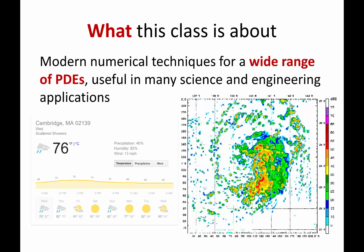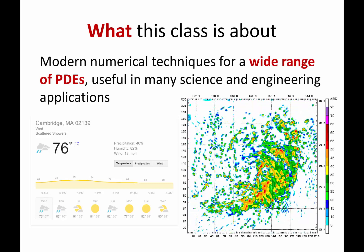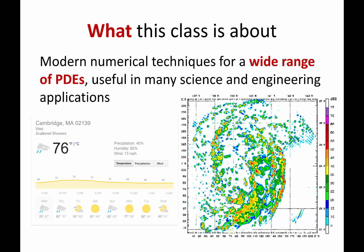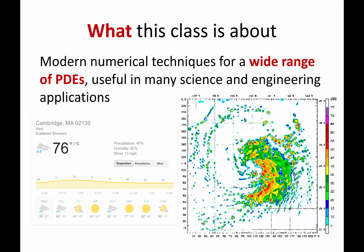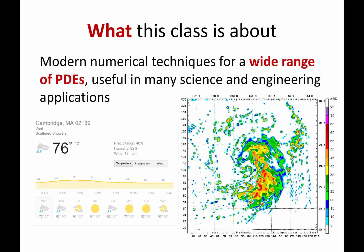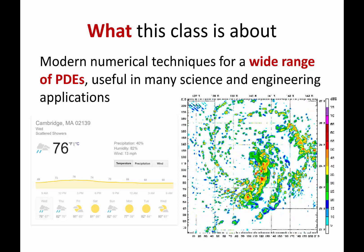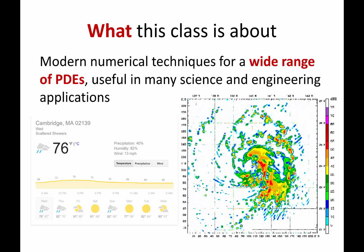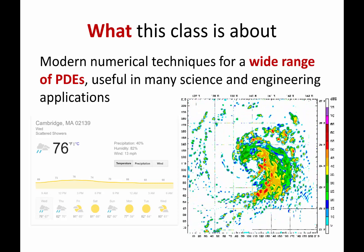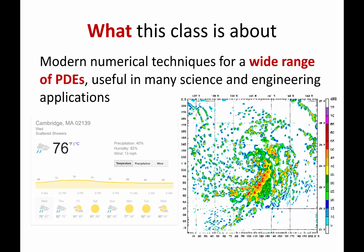So you have to time-integrate these partial differential equations starting from now, to tomorrow, to five days, to seven days — beyond which you can't really predict much because of chaotic behavior. But anyway, weather forecasting is still pretty useful all the way to a five-day range, and this is done by numerical solution of partial differential equations. So next time you look at a weather forecast, this is how it's done.